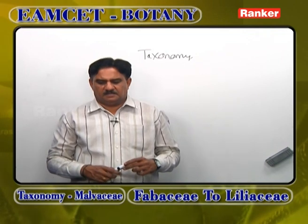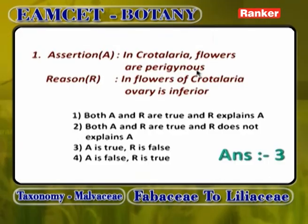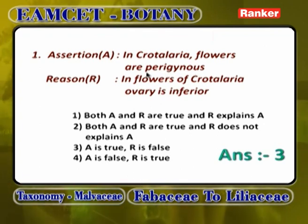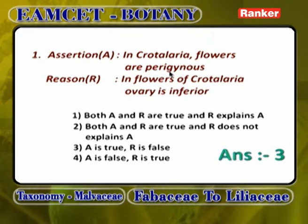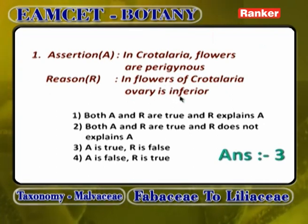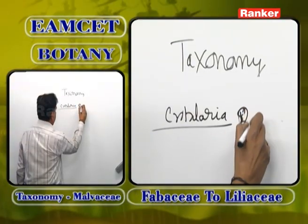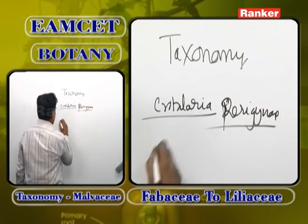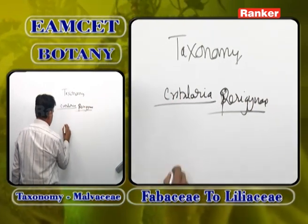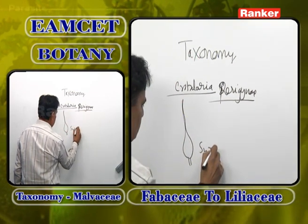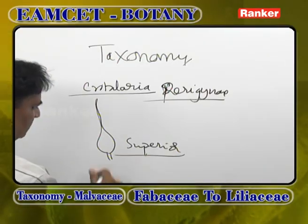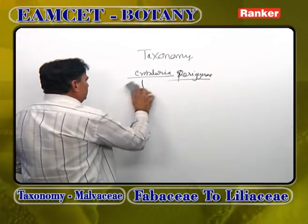First bit: in Crotalaria, the flowers are epigynous — this is wrong. Crotalaria juncea belongs to Fabaceae, the fiber-yielding plant popularly called sunn hemp. Sorry, the correct condition is hypogynous or perigynous. The thalamus is cup-shaped, but in Crotalaria, below the ovary a stalk is present which makes the ovary superior.